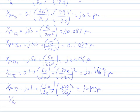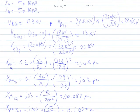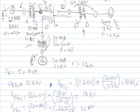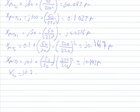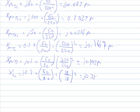For generator number two, which is rated 30 MVA and 18 kV — the old per-unit reactance is 0.2, and the new base voltage for generator two is 18 kV, the same as the old. We calculate: 0.2 multiplied by 50 over 30, times 18 over 18 squared, giving 0.333 per unit.